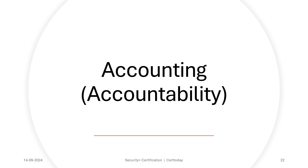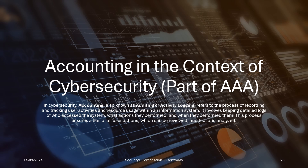The third and last component of the AAA is accounting, which in this context is about accountability — it has nothing to do with numbers per se. Accounting in cybersecurity, also known as auditing or activity logging, refers to the process of recording and tracking user activities and resource usage within an information system. It involves keeping detailed logs of who accessed the system, what actions they performed, and when they performed them — ensuring a trail of all user actions which can be reviewed, audited, and analyzed.